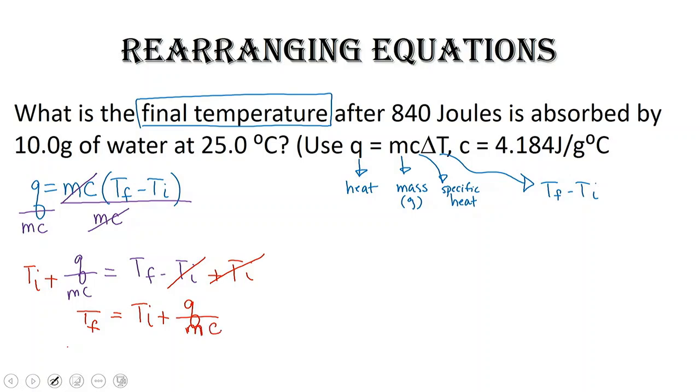So let's write down what we were given so we can solve this problem. I'm given that Q is equal to 840 joules. I'm given my mass, which is 10.0 grams. And I'm also given T initial, which is 25 degrees Celsius. And I'm also given what C is, 4.184 joules per gram degrees Celsius.